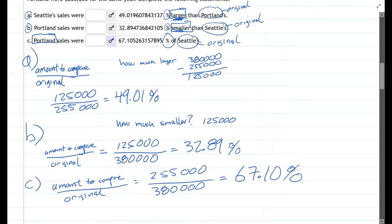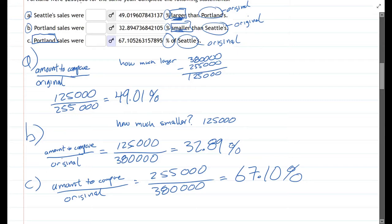And there we go. These three parts are a little bit different from each other. Hopefully this explains the difference between them. When it asks larger or smaller, that's going to be the difference between the two values as a percentage — and you have to figure out which one is the original each time.